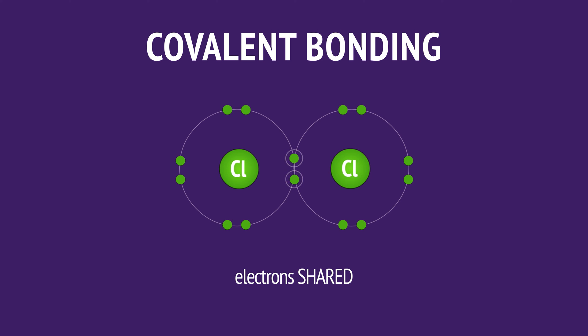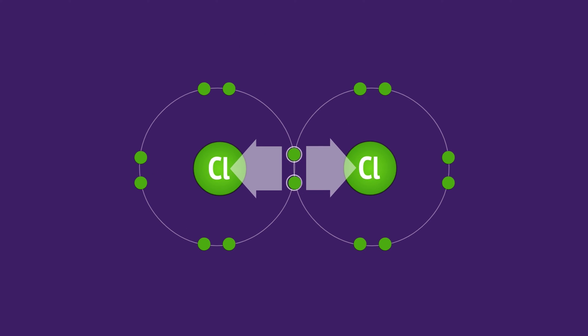Each chlorine atom shares one of its electrons with the other. The covalent bond is the mutual pull on the shared electrons, like a tug-of-war between the atoms.